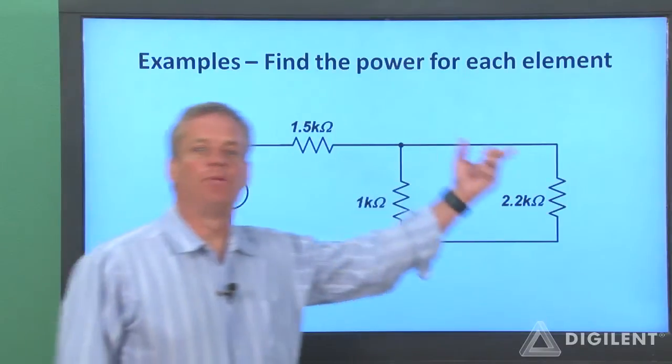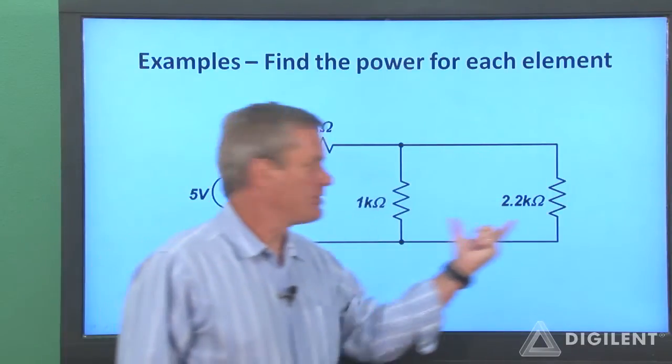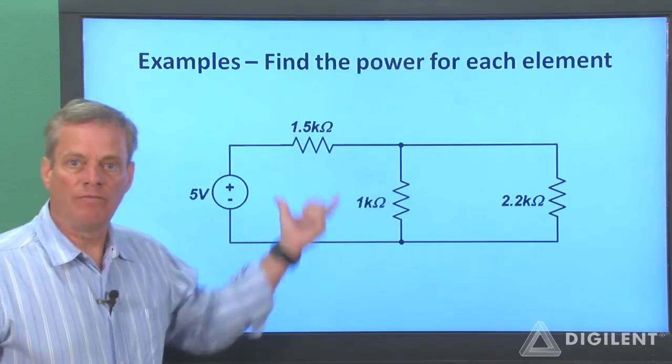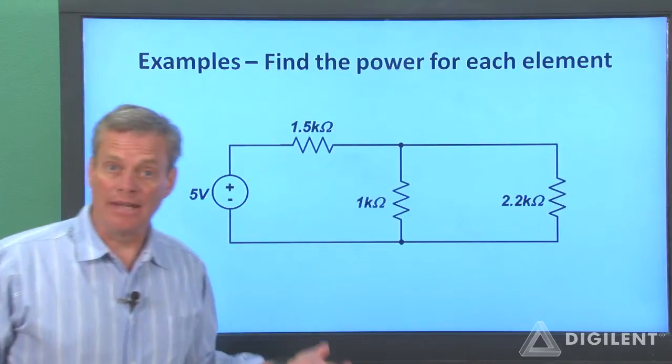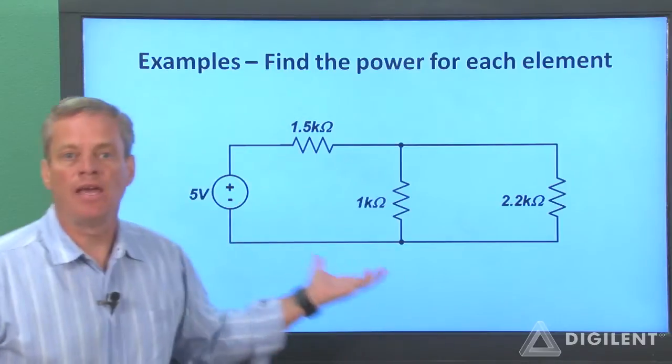Here's our example circuit. We're going to measure voltages and currents for each of the resistors in the circuit, use these measurements to calculate the power of each element, and then verify that conservation of power, that is, that the sum of all the powers in a circuit is zero, is obeyed for this circuit.